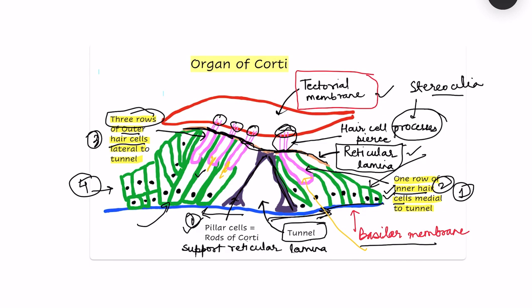The inner hair cells are on the medial side of the tunnel, and the outer hair cells are on the lateral side. These hair cells are innervated by neurons, which travel medially into the bony part of the cochlea called the modiolus, where there is a spiral ganglion. The spiral ganglion contains the cell bodies of the neurons — a ganglion by definition contains cell bodies.